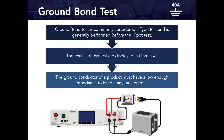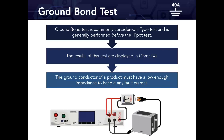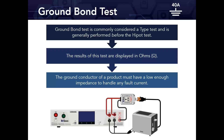The ground bond test is commonly considered a type test — performed once after design approval — but can also be implemented on the production floor as a routine test. It is generally performed before the hypot test. Think about why: if you run a hypot before ground bond, you haven't yet ensured a continuous path to ground. If you forget to connect your return clip during a hypot test, you might actually pass, because you're testing air — a perfect insulator.